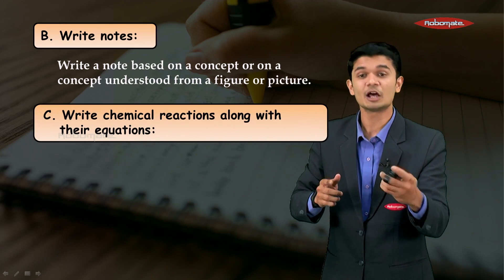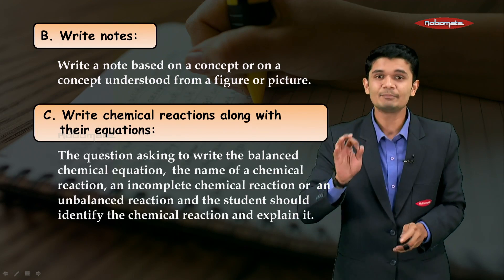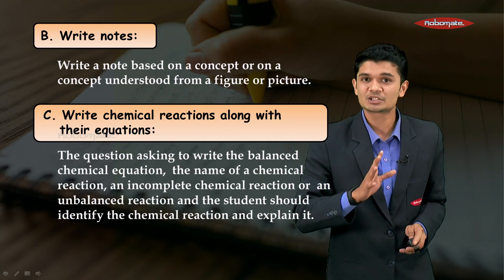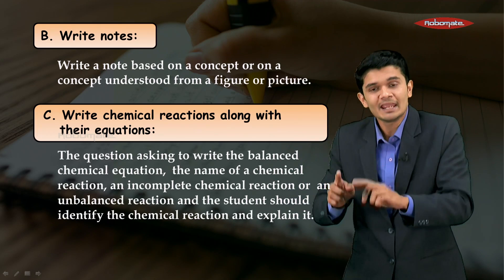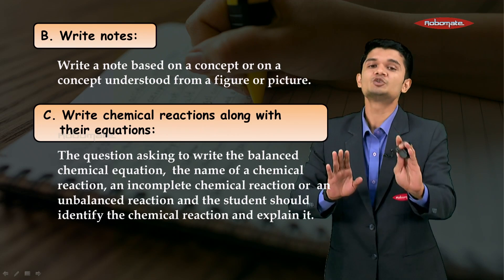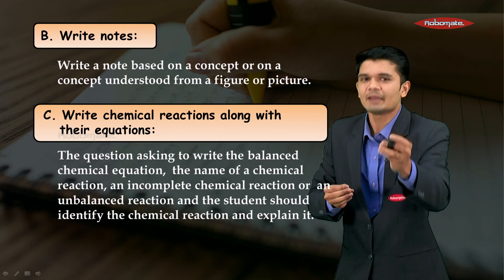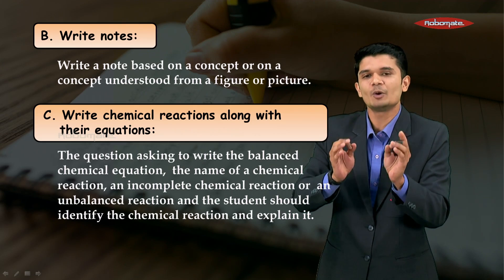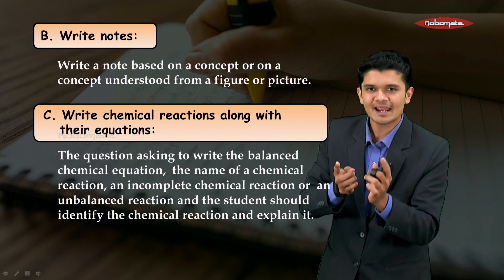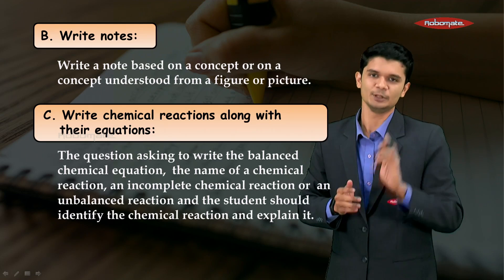We've also got questions like write chemical reactions along with their equations, mostly available in chemistry. In these questions, you may be asked to write a balanced chemical equation, name a chemical reaction, or you might be given an incomplete or unbalanced chemical reaction. You have to identify it, understand it, balance it, complete it, and then explain it carefully.